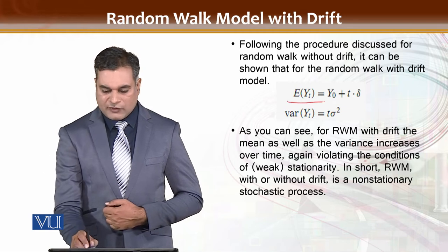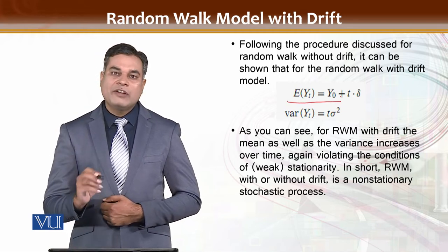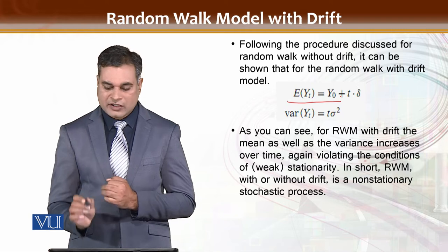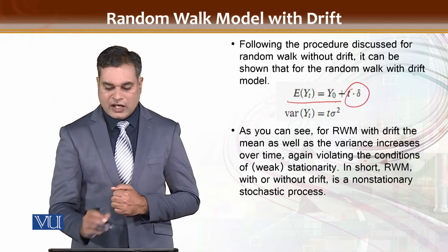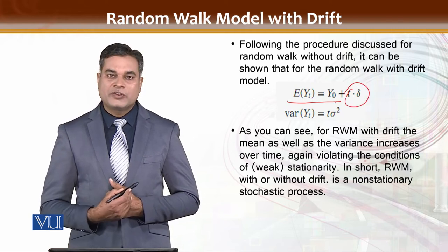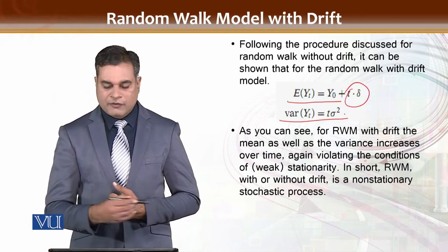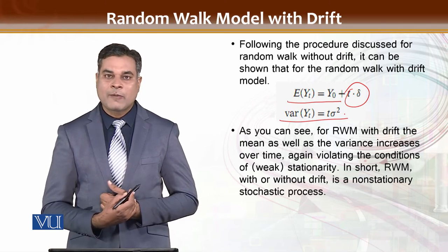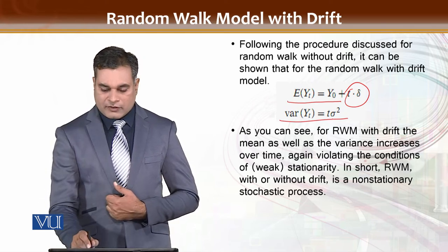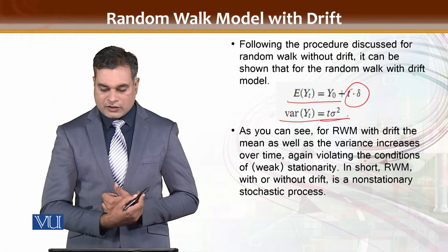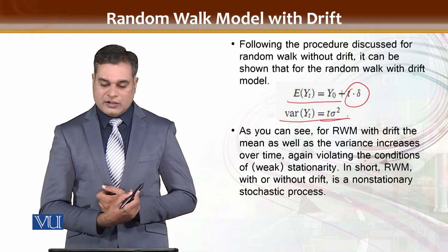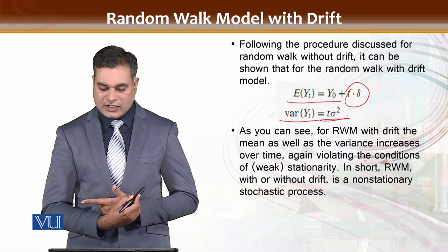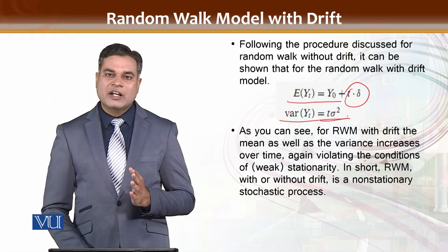The expected value of the dependent variable depends on the previous period value, and it also depends on t times sigma. This is the variance of the dependent variable, which is generally sigma squared. But if there is drift, the formula can change from sigma squared to t times sigma squared.